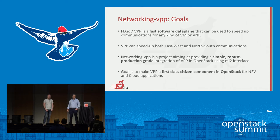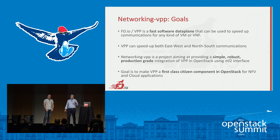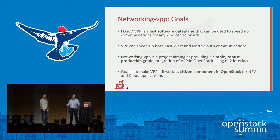VPP, to make it simple, is an extremely fast virtual switch. It's a data plane that is extremely fast and can process a huge amount of packets per second. It can be used for east-west communications inside a VM between different VMs, or for north-south communication when it goes to the physical world. That's based on DPDK. The reason why it's called VPP — Vector Packet Processing — is that instead of working packet per packet, it works vectors of packets by vectors of packets.